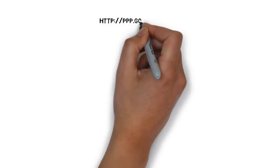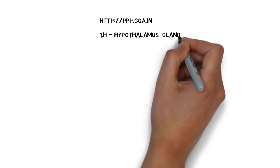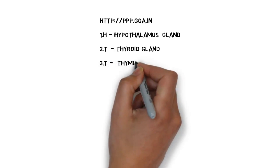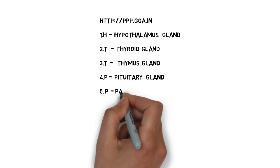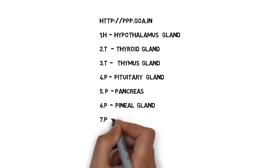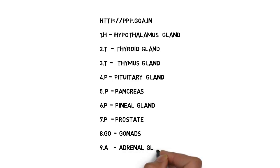Here the website is http://ppp.goa.in. Try to remember this website address. HTTP is unique for all the websites, so try to remember this website name: ppp.goa.in. If you feel confused to remember PPP, the easy way is to remember it as Public-Private Partnership.